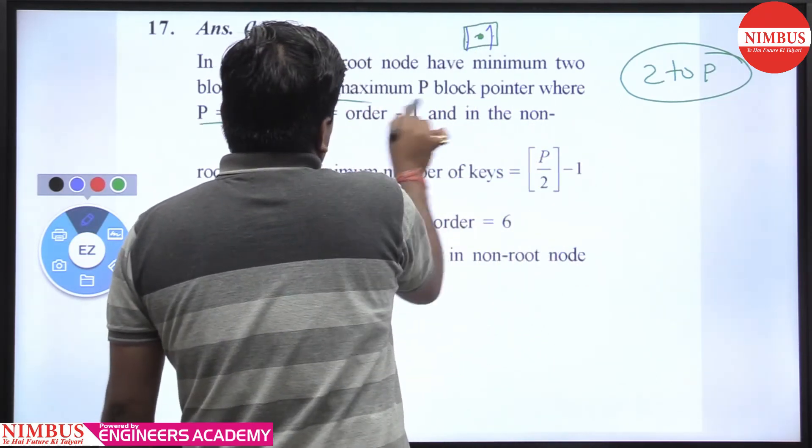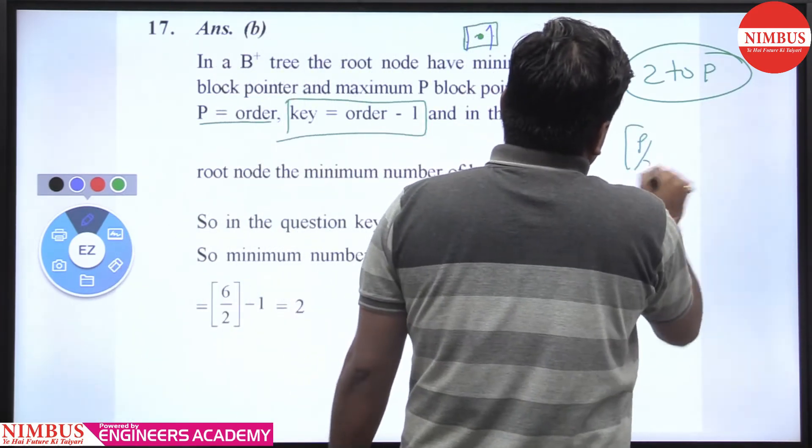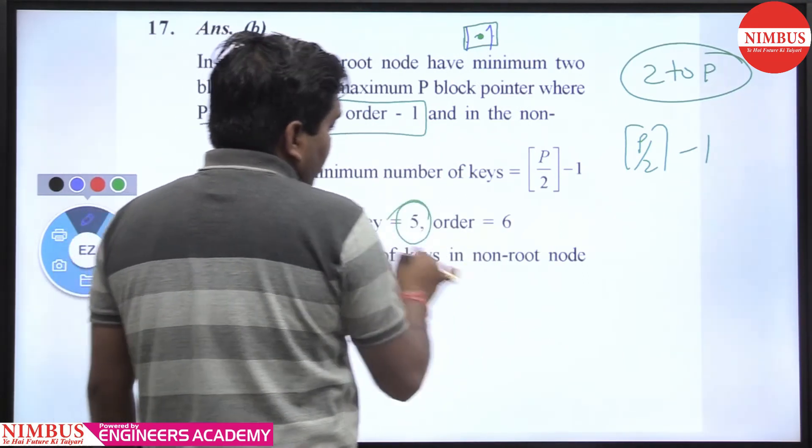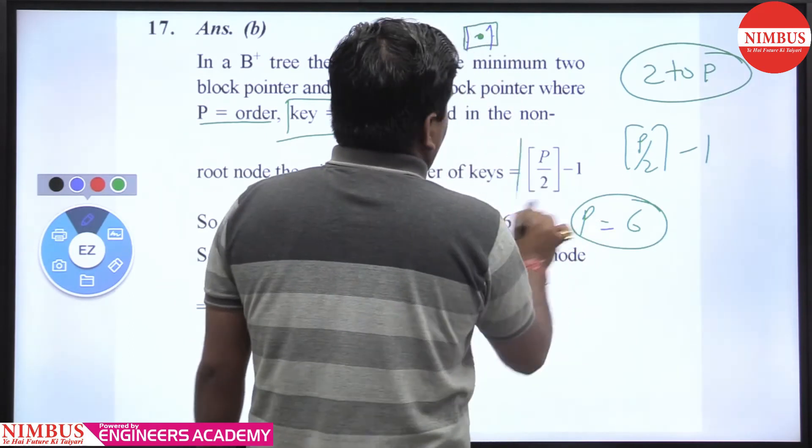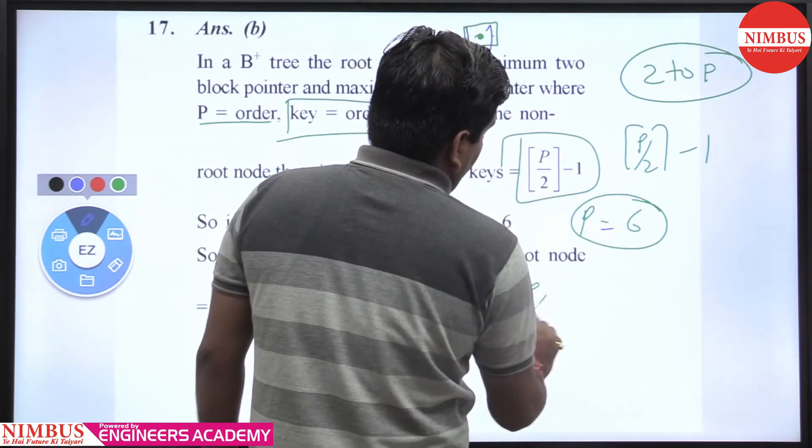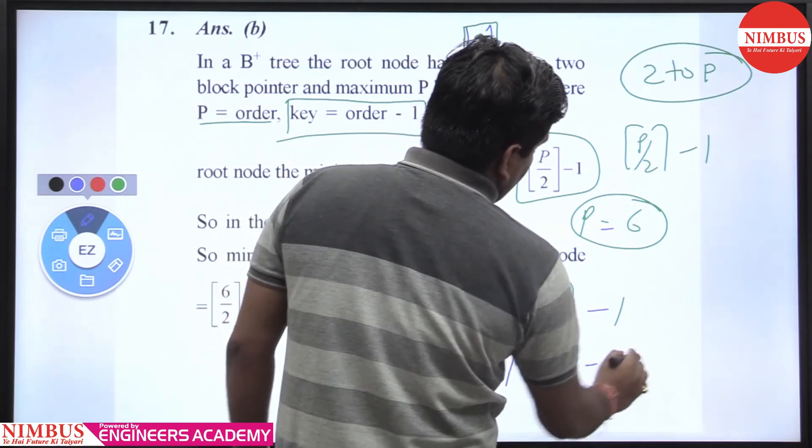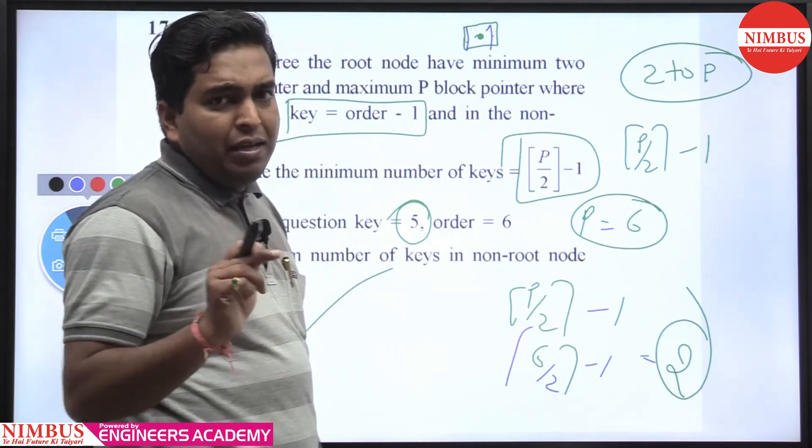For non-root nodes, the minimum number of keys is ceiling(p/2) - 1. In the question, the maximum number of keys is given as 5, so the order is 6. The minimum number of keys is ceiling(6/2) - 1, which is 3 - 1 = 2. So 2 is the right answer. Thank you.